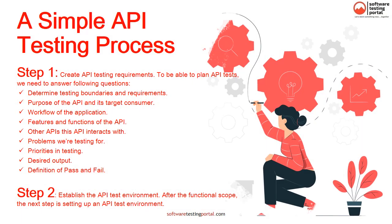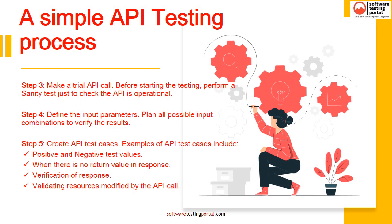Step 1 is to create API testing requirements. To plan API tests, we need to answer the following questions: determine testing boundaries and requirements, purpose of the API, workflow of the application, features and functions of the API, and definition of pass and fail. Step 2 is to establish the API test environment. After the functional scope, the next step is setting up an API test environment. Step 3 is to make a trial API call — before starting testing, perform a sanity test.